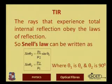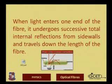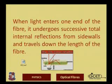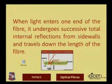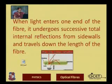Rays that experience total internal reflection obey the laws of reflection only. Snell's law states that n1 sin(theta_1) = n2 sin(theta_2). When the incident angle equals the critical angle theta_c and the refracted angle is 90 degrees, sin(theta_c) = n2/n1. When light enters one end of the fiber, it undergoes successive total internal reflections from the side walls and travels down the length of the fiber.